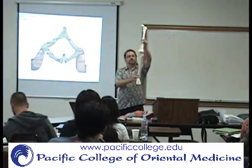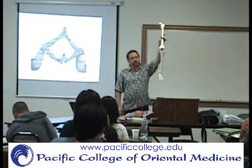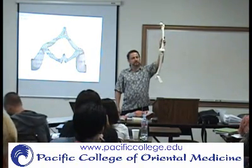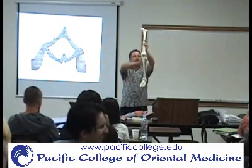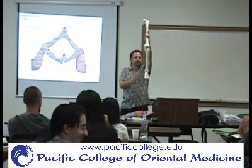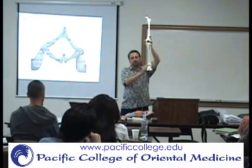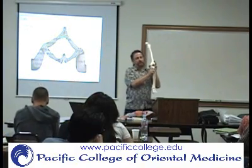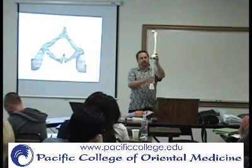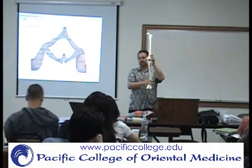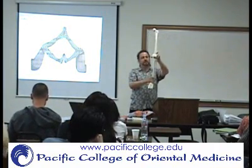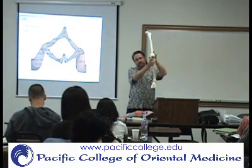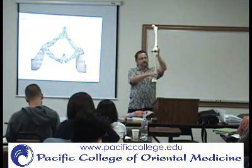The lower leg bone that forms the major articulation with the knee is the tibia. The tibia also forms more of the ankle joint as well, so the tibia is the primary weight-bearing bone in the lower leg. The fibula only partially contributes. You have both a superior tibio-fibular articulation and an inferior one.